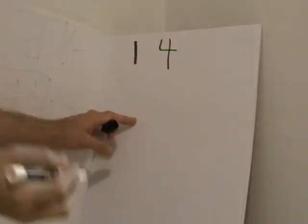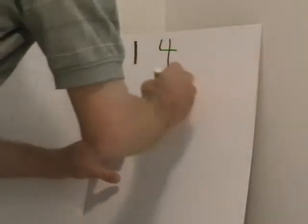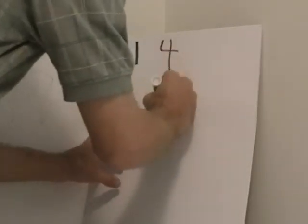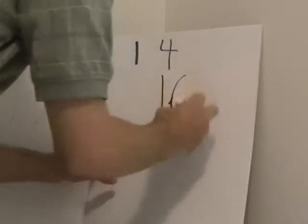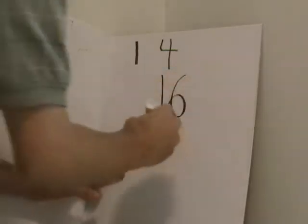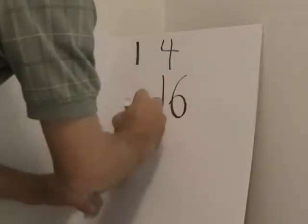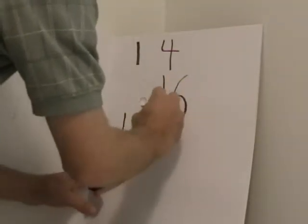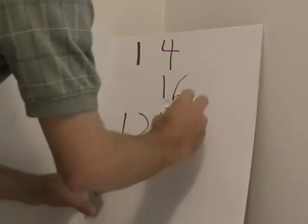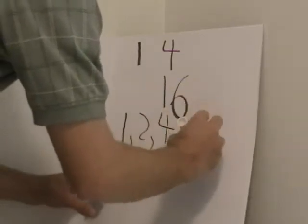One way to find out if a number is a perfect square is look at its factors. Let's take number 16. Let's list its factors. It has 1, 2, 4, 8, and 16.